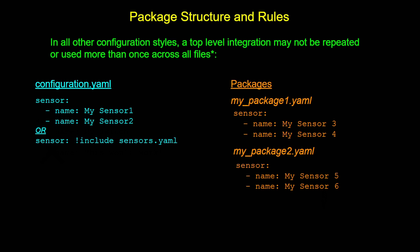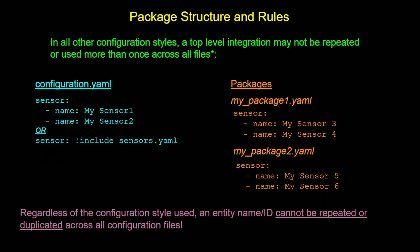There is one other thing that applies regardless of the configuration style you're trying to use: you can't duplicate an entity name or ID across all of your configuration files. For example, you cannot have something like a temperature sensor named 'living room temperature' defined more than once, regardless of whether it's a standard configuration, split configuration, or a package. I'll show how this might be a potential issue when you're using packages shortly.